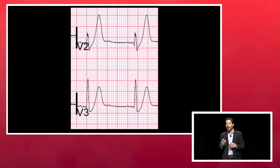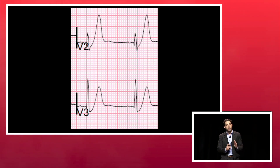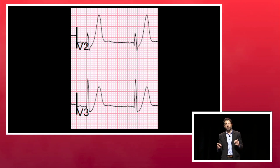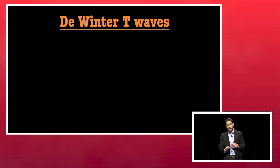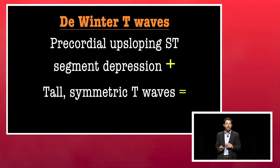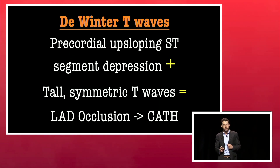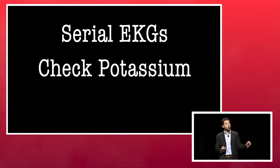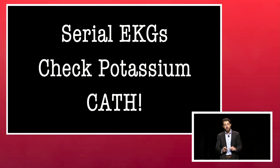The de Winter pattern — sear this in your memory: precordial leads with upsloping ST-segment depression into big bulky T-waves that may evolve over time or remain static on repeat EKGs. This pattern indicates the presence of an LAD occlusion — they go to the cath lab, and this alone is diagnostic. If you see anything that looks like this, get your serial EKGs, get a point-of-care potassium to rule out hyperkalemia, and do not hesitate to send the patient to the cath lab.